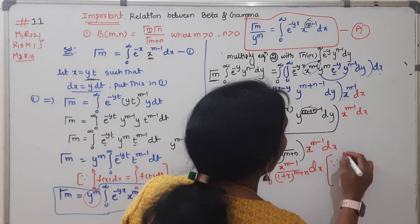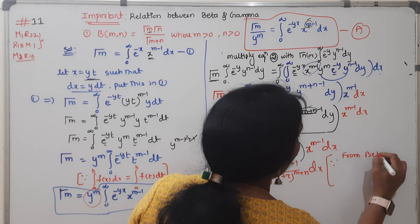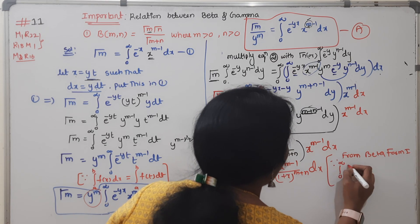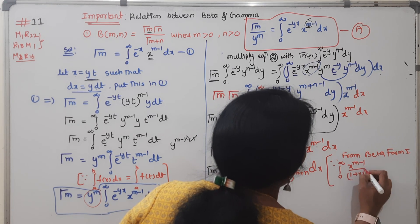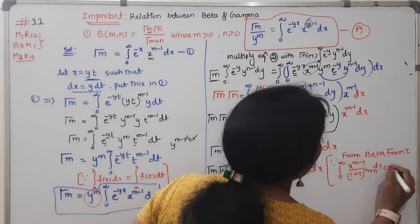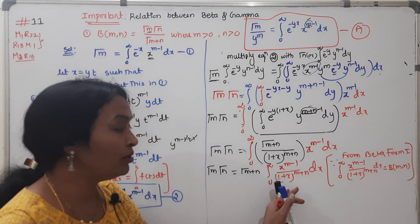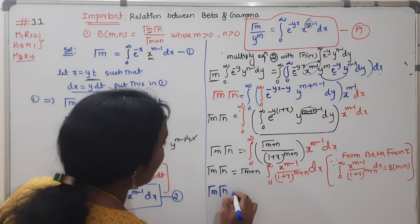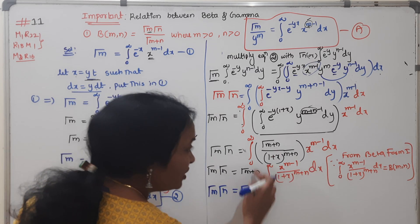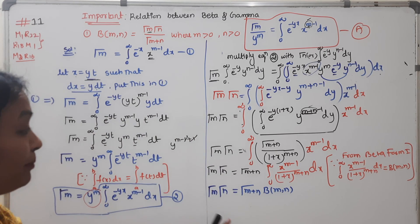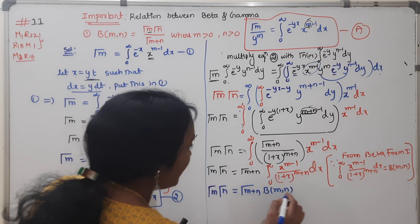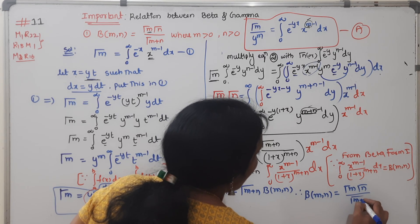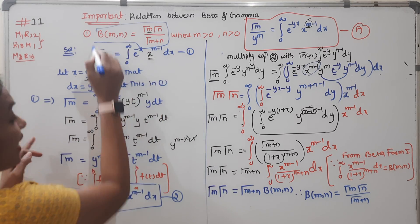From Beta form 1 we know: the integral from 0 to infinity of x^(m-1) divided by (1+x)^(m+n) dx equals Beta(m,n). So we can write Gamma(m)·Gamma(n) = Gamma(m+n) times Beta(m,n). Therefore, Beta(m,n) = Gamma(m)·Gamma(n) / Gamma(m+n). Is it clear? Hence it is proved.